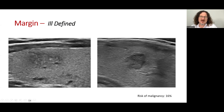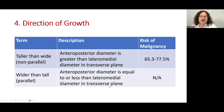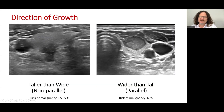The fourth descriptor is the direction of growth, which is a reliable finding in all TIRADS systems and proposed in high TIRADS as well — taller than wide. This is a non-parallel orientation where the anterior-posterior diameter is greater than the lateral-medial diameter. Examples shown include a taller-than-wide nodule and a wider-than-tall nodule.